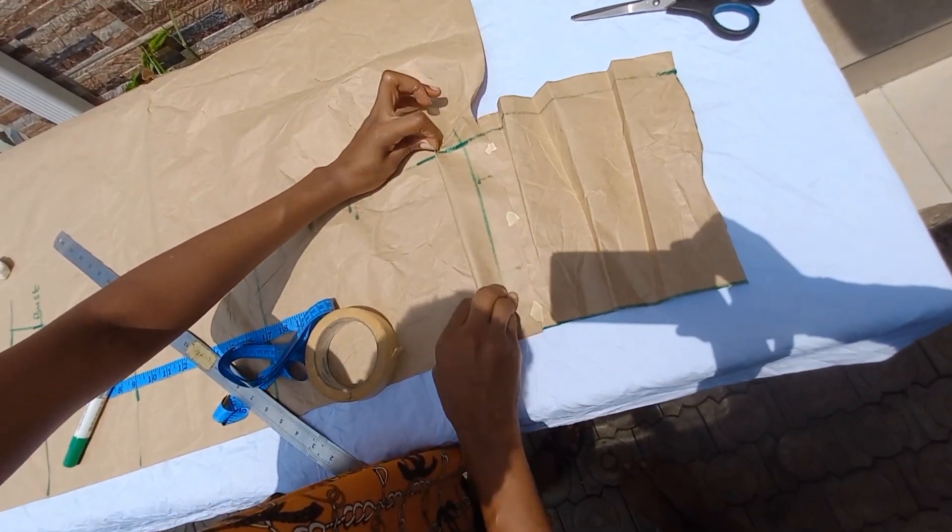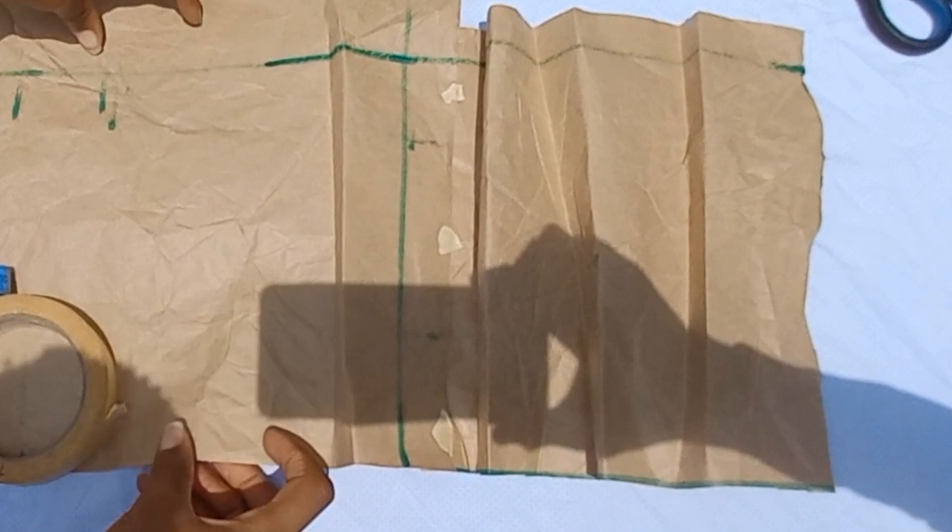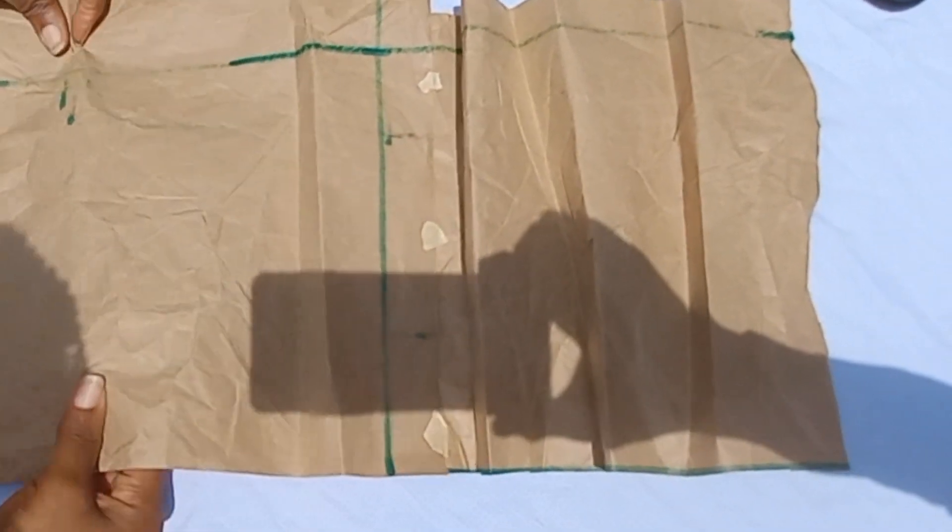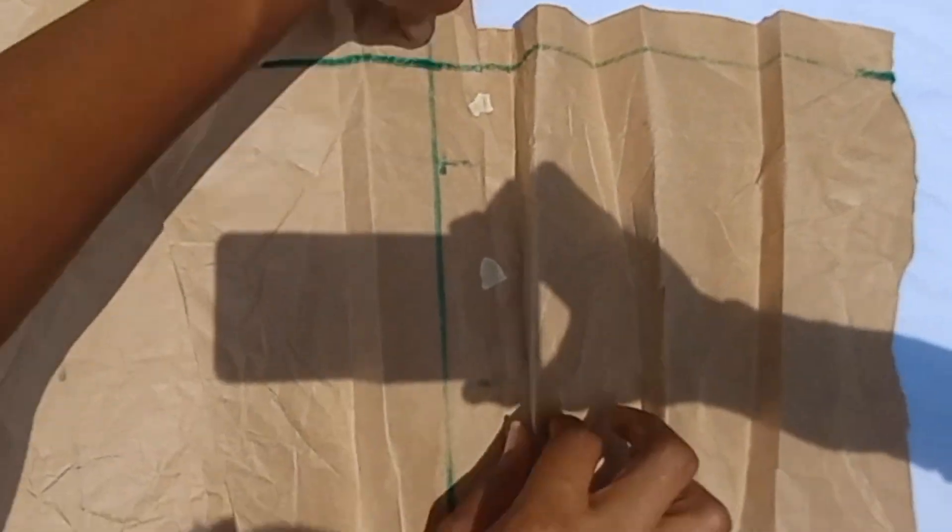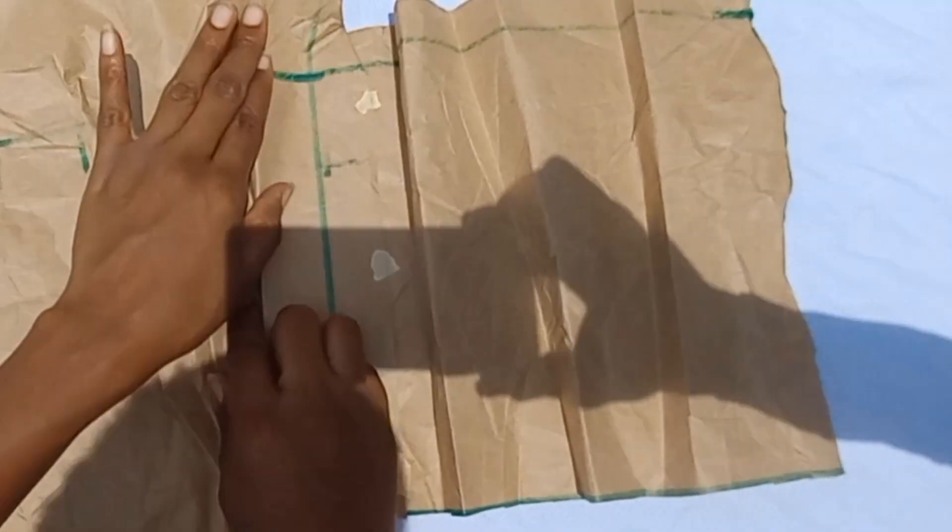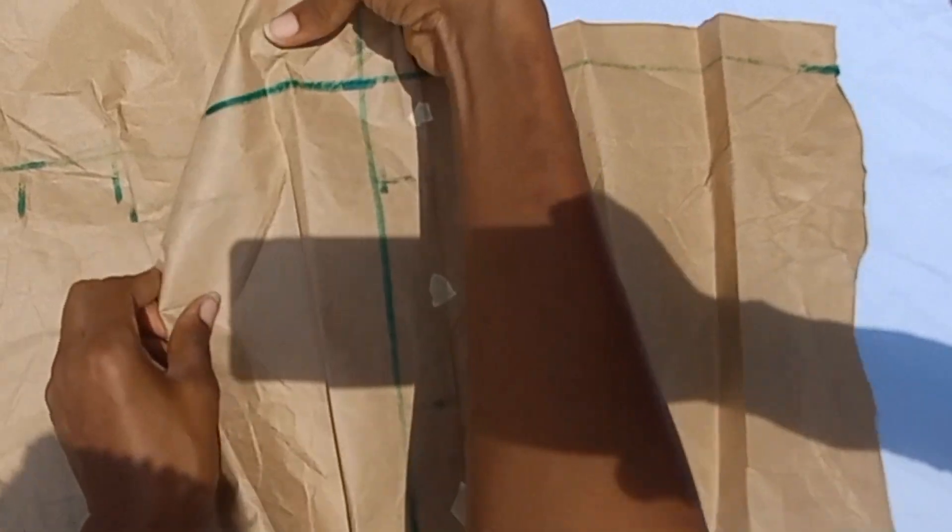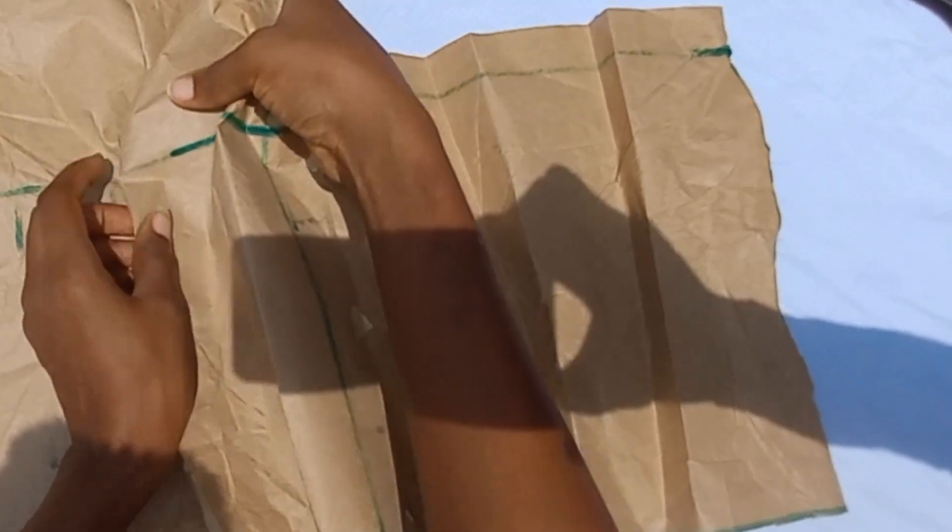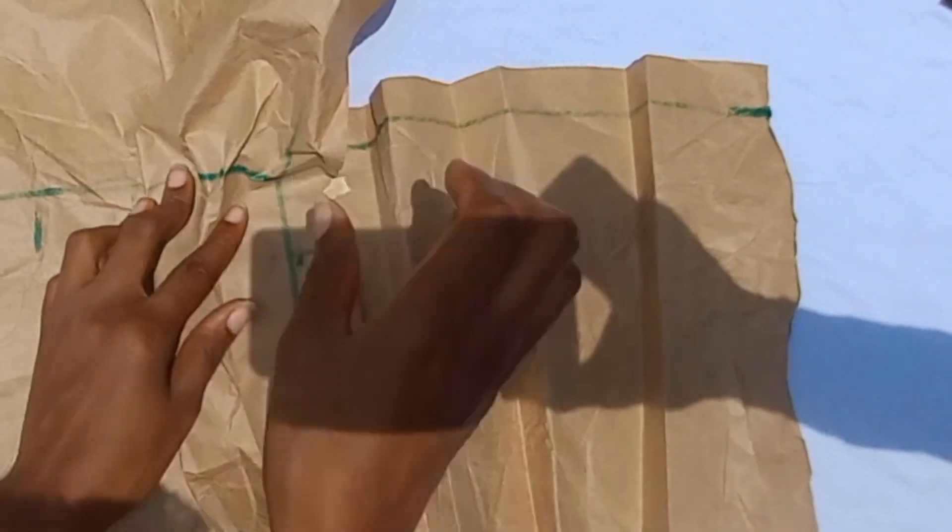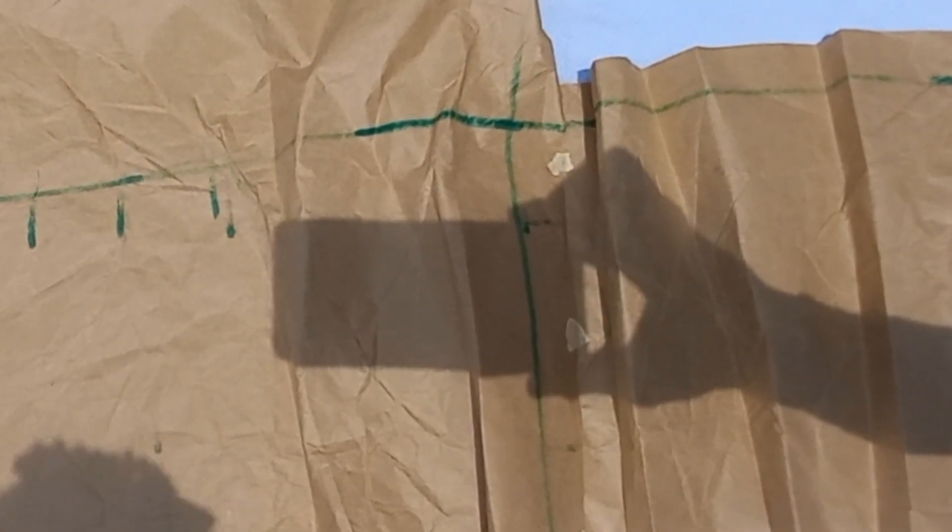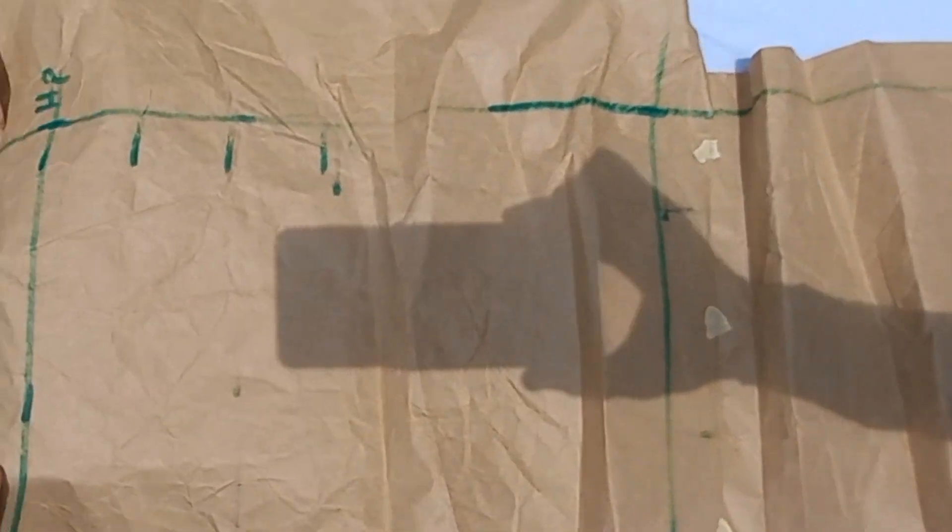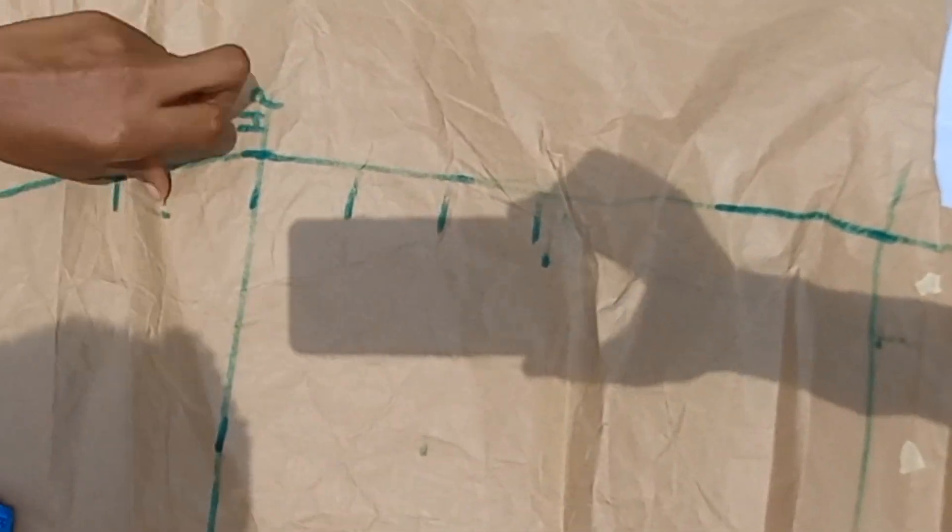If you notice, when we started this video, the original length of our dress was 40 inches. But by the time we extended paper, it got to about 50. But remember, this is because it is paper. I would advise you to add up to 20 inches to get a full effect from this side. You're going to be doing your gathers or your pleats, whatever style you choose.